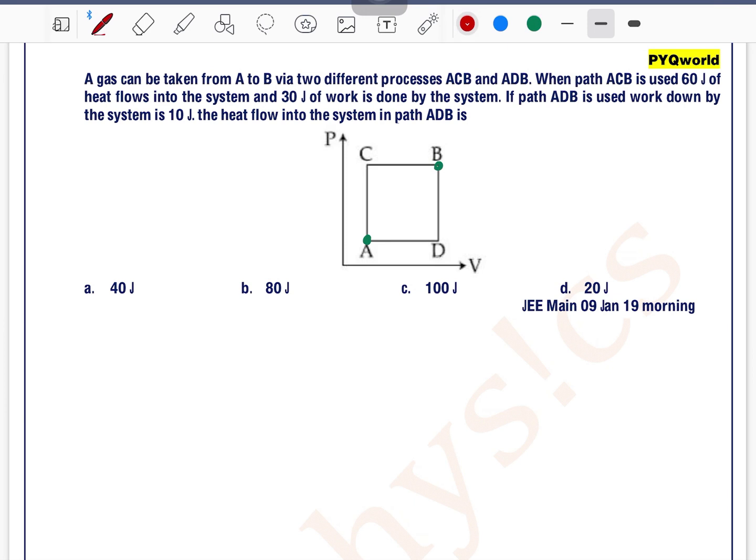Via path ACB, 60 joules of heat flows into the system, so Q equals 60 joules, and the work done by the system is 30 joules. If path ADB is used, work done by the system is 10 joules.